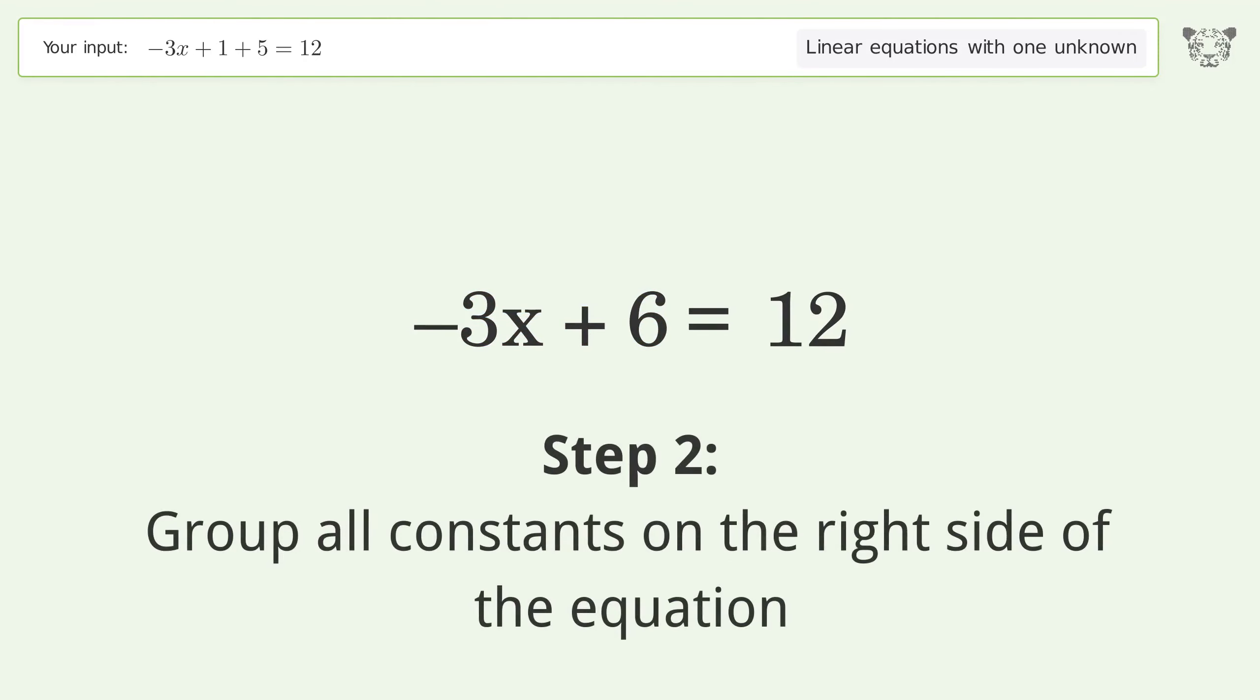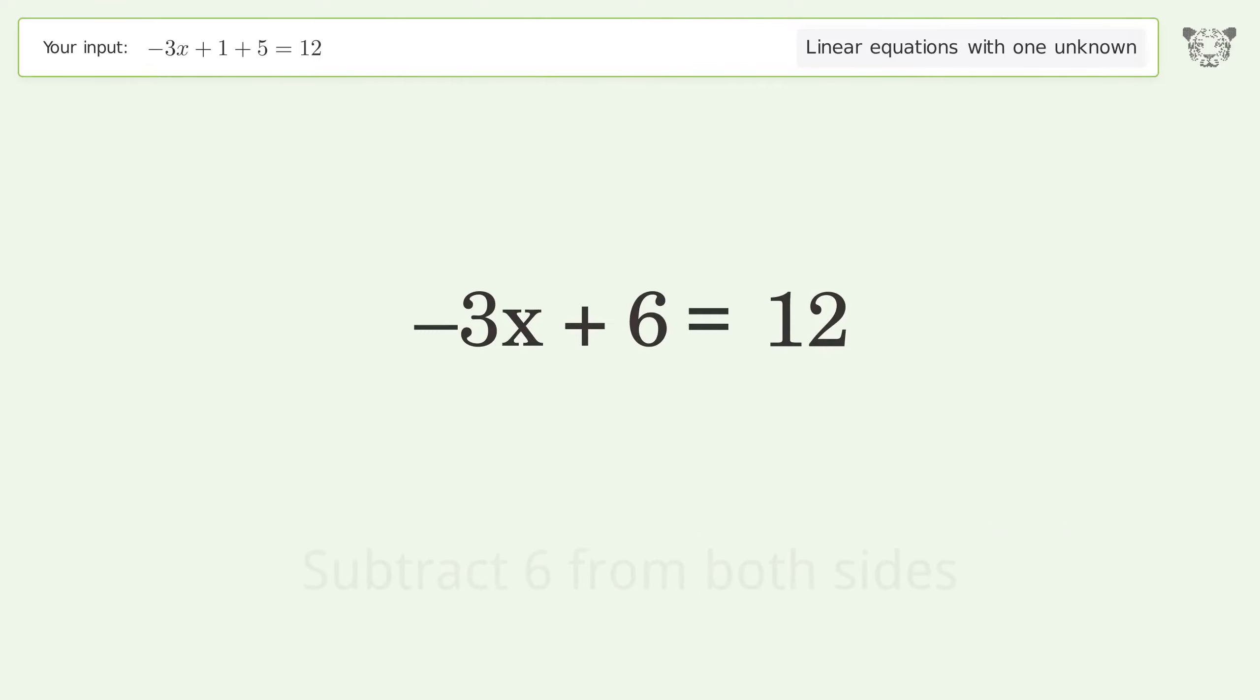Group all constants on the right side of the equation. Subtract 6 from both sides. Simplify the arithmetic.